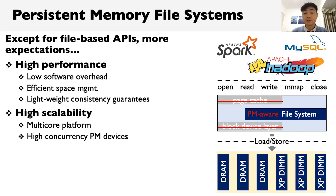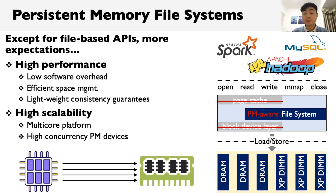Second, a file system should also be highly scalable. Today's multicore platforms consist of tens to hundreds of physical cores, and applications can leverage such platforms to process requests in parallel. Meanwhile, persistent memory also enables high concurrency with multiple channels. As a result, it is very important for a file system to achieve high scalability, which is not well addressed by most existing work.